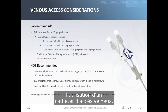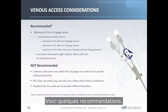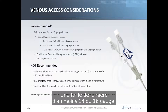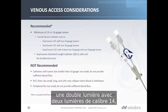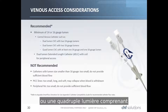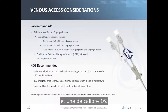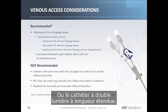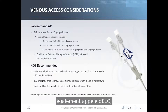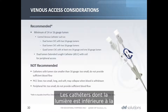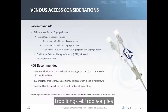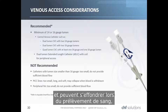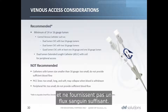Aquadex therapy requires a venous access catheter with a minimum of 14 or 16 gauge lumen size. For central venous catheters, options include a dual lumen with two 14 gauge lumens, a dual lumen with two 16 gauge lumens, a quad lumen including at least one 14 gauge and one 16 gauge lumen, or the dual lumen extended length catheter (DELC) with a coil for peripheral access. Not recommended are catheters smaller than 16 gauge, PICC lines (too small, long, and soft), or peripheral IVs, which do not provide sufficient blood flow.